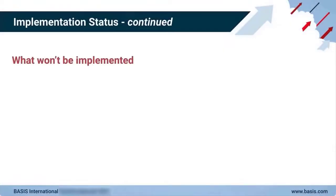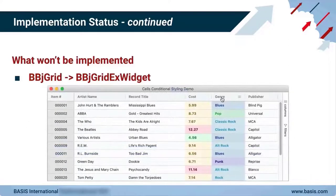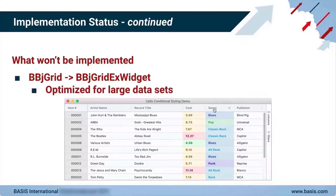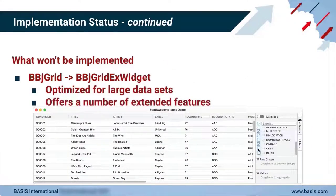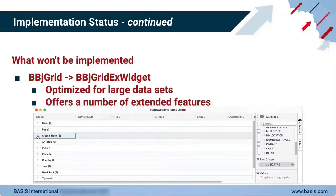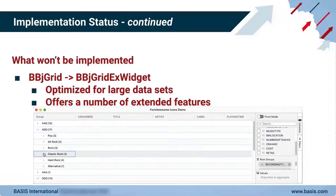As it stands today, the only control that Basis does not plan on implementing in the DWC is the BBJ Grid. The BBJ Grid is a complex component, and Basis doesn't want to just copy the existing BUI implementation without making significant changes. Instead, Basis recommends using the BBJ Grid EX widget — a fast, feature-rich grid component optimized to display large datasets. It offers extended features that go far above and beyond the BBJ Grid, such as sorting, filtering, searching globally or by column, column grouping, conditional styling, pivot modes, ad-hoc charting capabilities, and more.